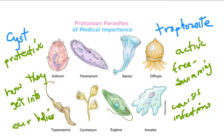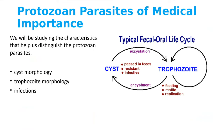Most of these infections are going to be through the fecal-oral route, meaning the organisms are picked up from contaminated hands or some other contaminated fomite or inanimate object, and then get into your mouth. The most important things on the practical are the cysts, the trophozoite, and what type of infection it causes.